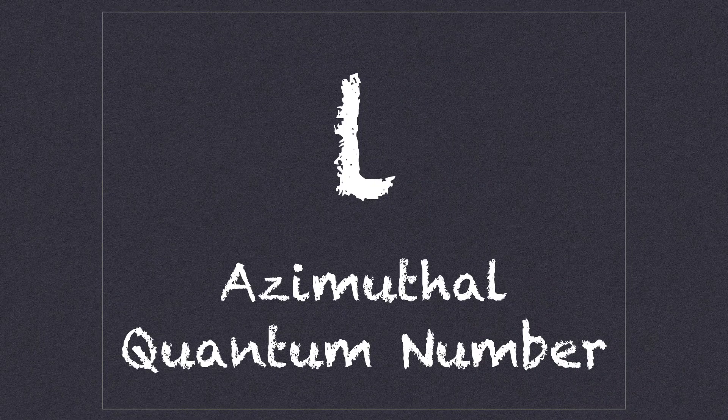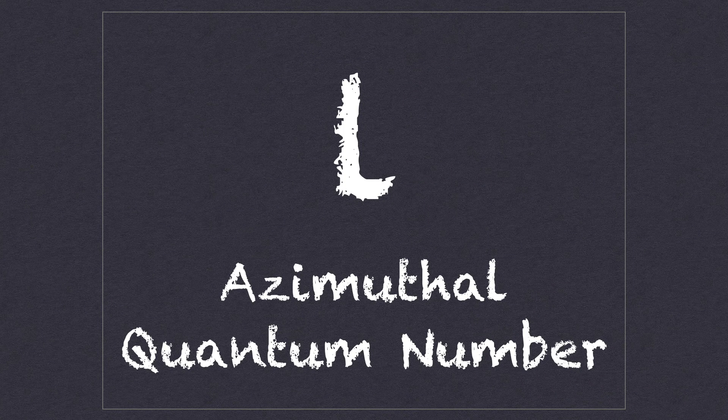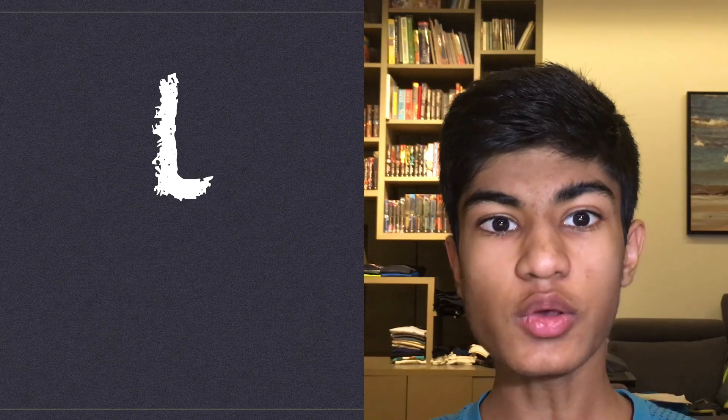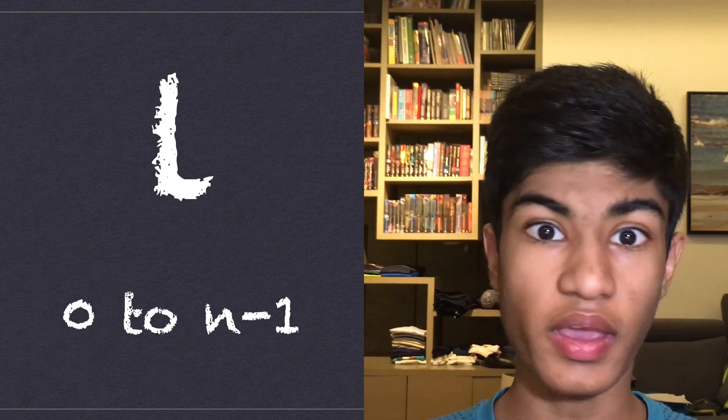This is where the second quantum number, L, the azimuthal quantum number comes in. This tells us which subshell an electron is in. The value of L can range from zero to N minus one.